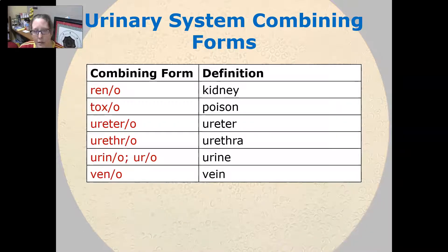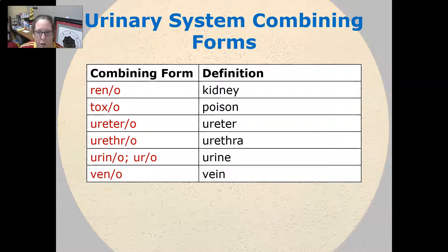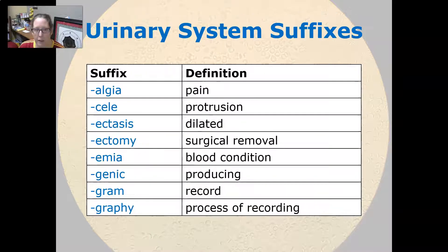Reno is kidney. Toxo is poison. Uretero is ureter and urethro is urethra. Urino is urine and veno is vein. Now let's look at some suffixes.